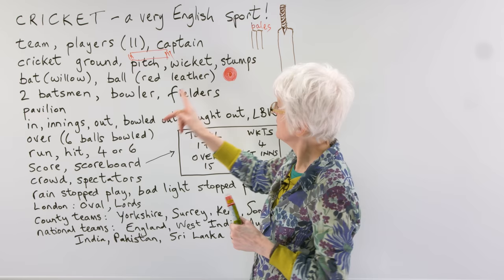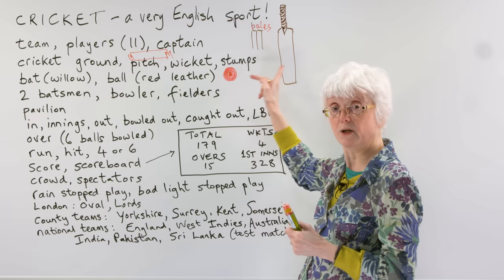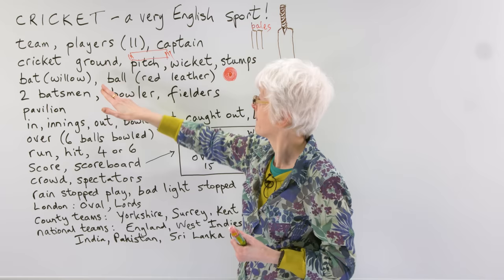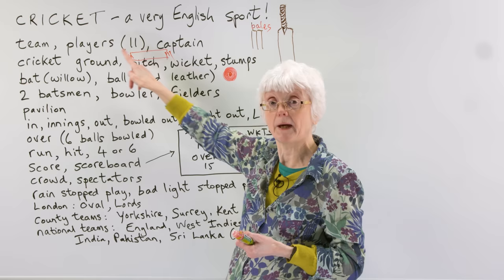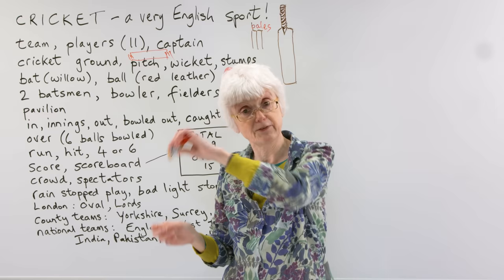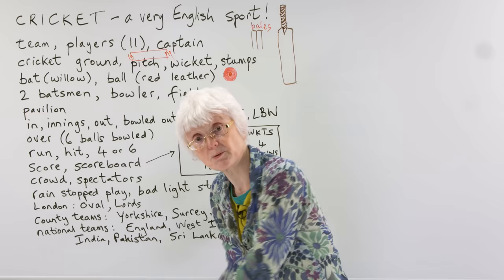Then you have the bat, which the batsman uses, which is made of wood from a willow tree, so it's quite hard. There's a ball which is covered in red leather, traditionally. There are two batsmen, one at each end of the pitch. There's a bowler who belongs to the other team, who bowls the ball at the batsman, and the batsman has to hit the ball. It's a little bit like American baseball, but the details are different.